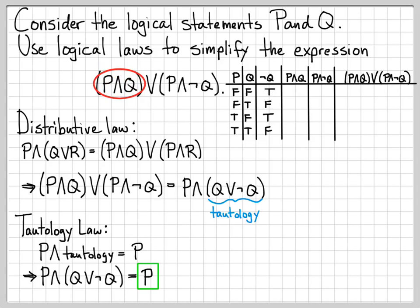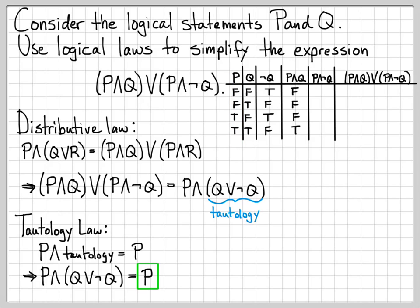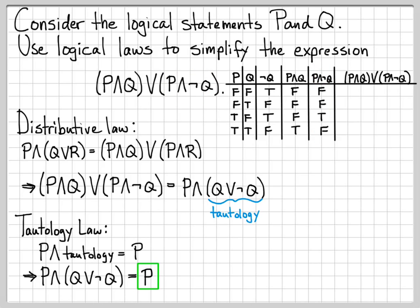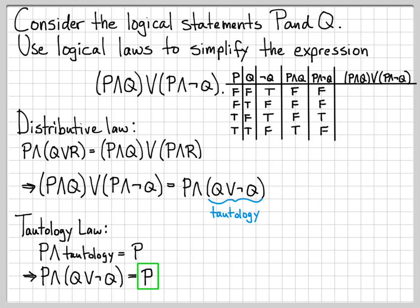Since I have a P and Q term, I make a P and Q column and fill it in by anding those two columns together — giving F, F, F, T. I also have a P and not Q term, so I make a column for that and fill it in. Then, now that I have both pieces, I can make a column for the overall logical expression by oring those two columns together — giving F, F, T, T.